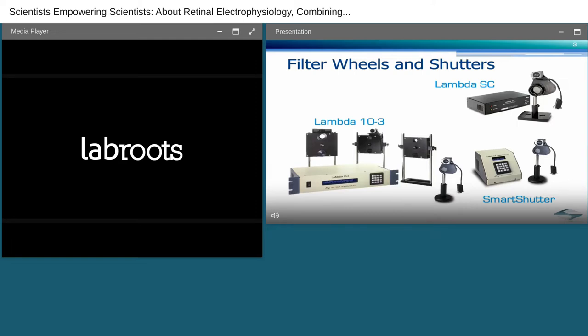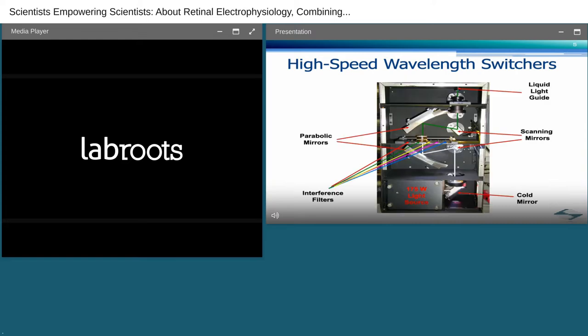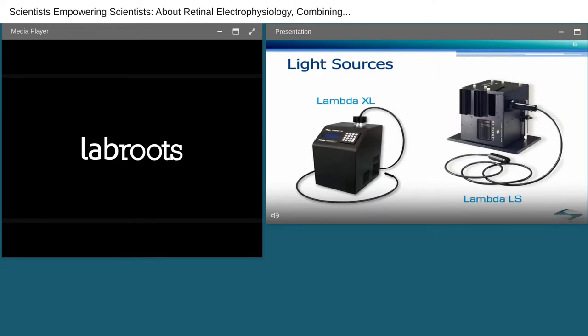Over 30 years ago, Sutter engineers set out to design a reliable, fast, electrically quiet, computer-controlled filter wheel. The result was the Lambda 10. As technology advanced in the field of imaging, so was demand for faster wavelength switching speeds than the filter wheel could provide. Sutter introduced the Lambda DG4. The DG4 was a complete illumination system, offering speed and versatility for rapid wavelength switching in less than a millisecond. This high-speed switching was achieved by using dual-scanning mirrors mounted on galvanometers directing the light through interference filters for wavelength selection.